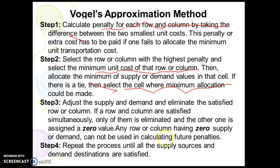Any row or column having zero supply or demand cannot be used in calculating future penalties. Repeat this process until all supply sources and demand destinations are satisfied.